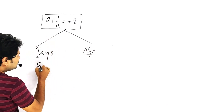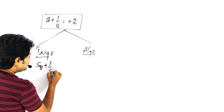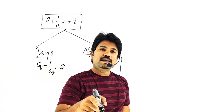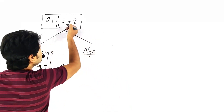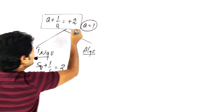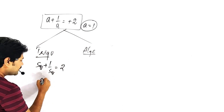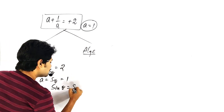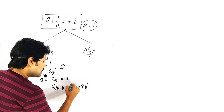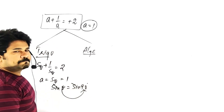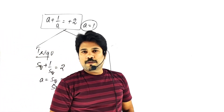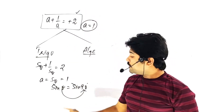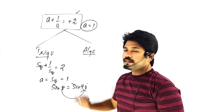What is it? Sin theta plus 1 by sin theta equals 2. When will this be satisfied? Since a equals 1 and here a equals sin theta, we need sin theta equals 1. Sin theta equals 1 when theta equals 90 degrees. So this equation is satisfied only when theta equals 90 degrees.